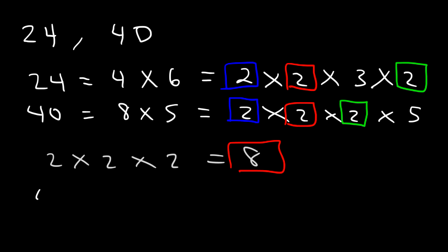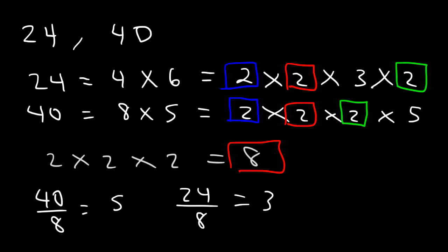And, you can check it. If you divide 40 by 8, you get 5. 24 divided by 8, you get 3. So, the GCF is going to be divisible — 24 and 40 both have to be divisible by the GCF, 8.